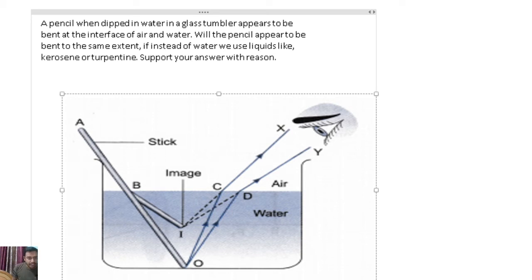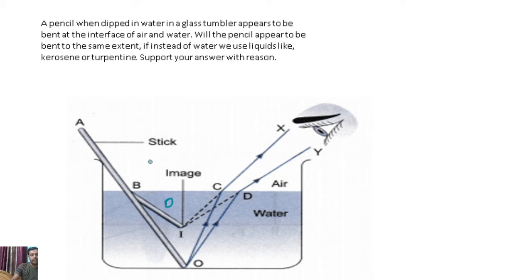There is a diagram in the question that I have supplemented. When light travels from the denser medium to the rarer medium, it bends away from the normal.